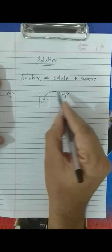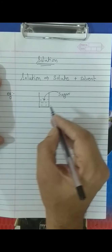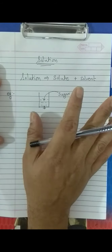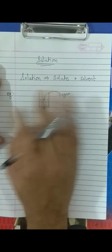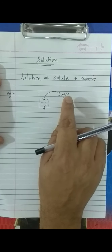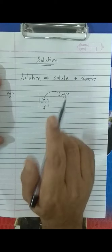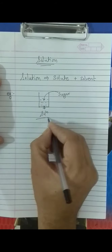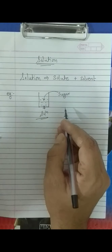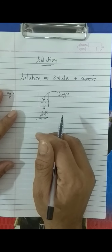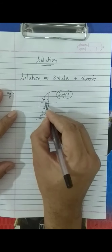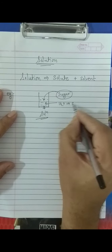The sugar gets dissolved in the water and it becomes a solution. But if the sugar does not dissolve, we can't call it a solution. We can call it a solution only when the substance added gets dissolved. So in this solution, which part is called solute? Obviously, the sugar is called solute, and the water is called solvent.